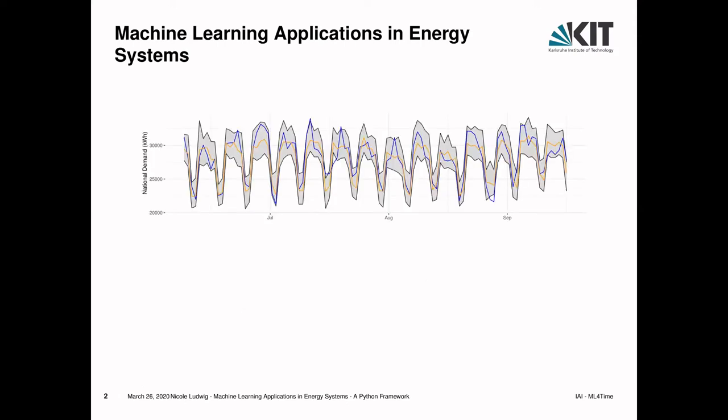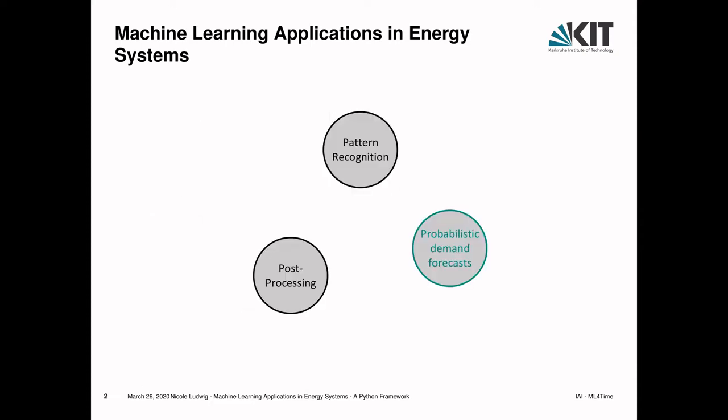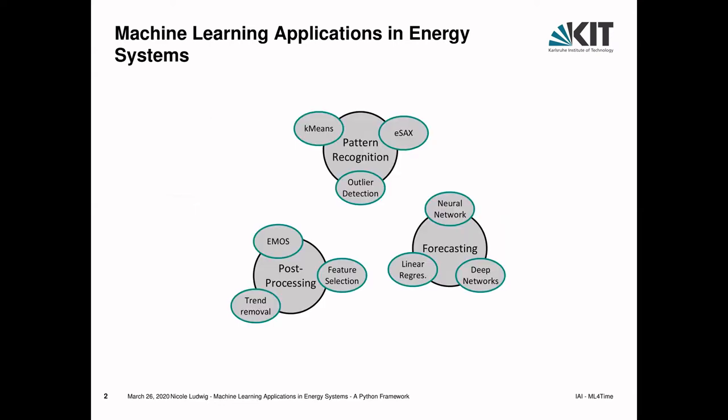Probabilistic forecasting involves predicting, for example, the national demand, but with uncertainty bands on how the demand is going to behave. We're also looking into post-processing, which is basically taking the output of meteorological models and post-processing them so that the statistical biases are reduced and we can use them properly in forecasting.